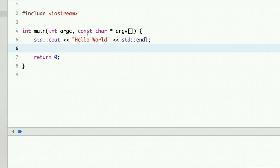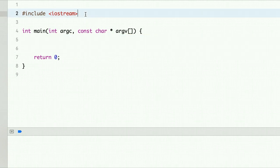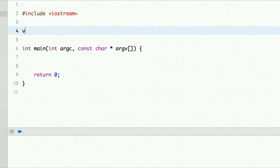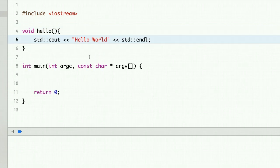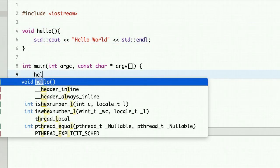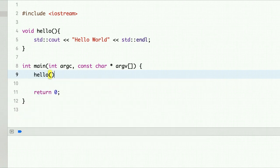So let's see it in code. This is a simple hello world program. Let's move it to our function hello and call this hello from main.